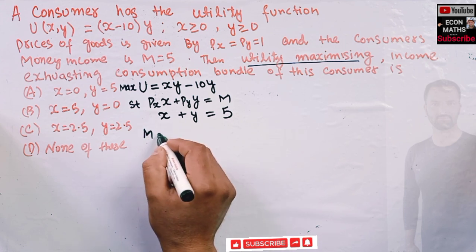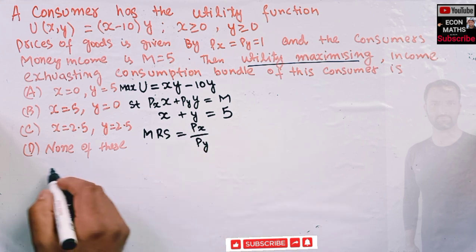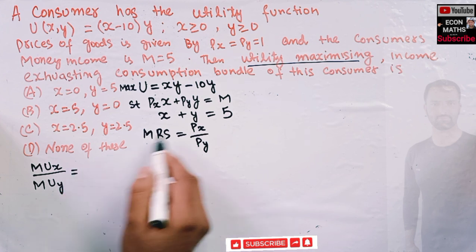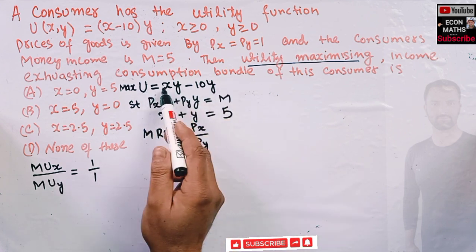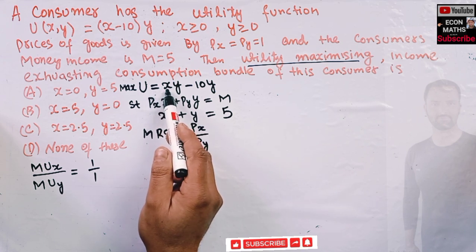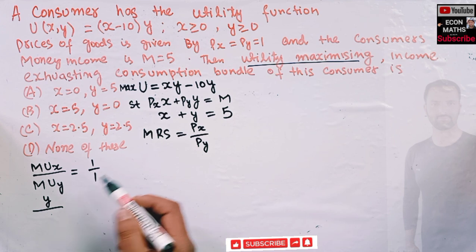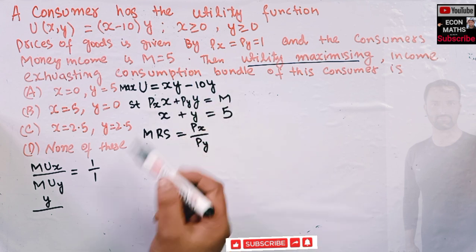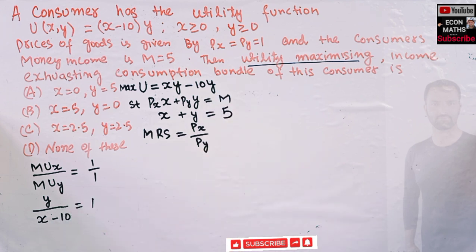Using the tangency condition, the marginal rate of substitution must equal the price ratio. MRS = MUx / MUy = price of x / price of y = 1/1. Differentiating U = xy minus 10y with respect to x gives MUx = y. Differentiating with respect to y gives MUy = x minus 10. So setting MRS equal to one: y divided by (x minus 10) equals one, which means y equals x minus 10.